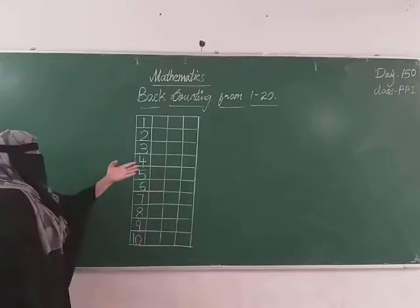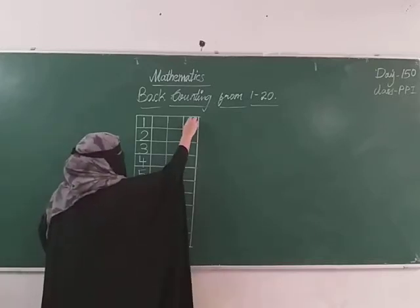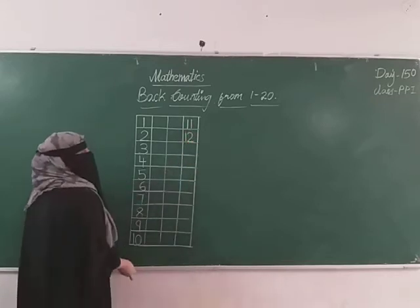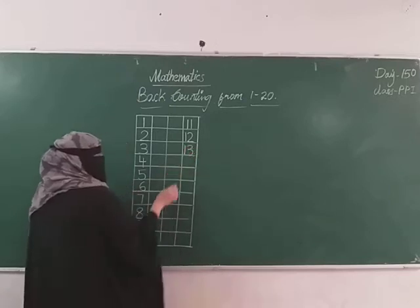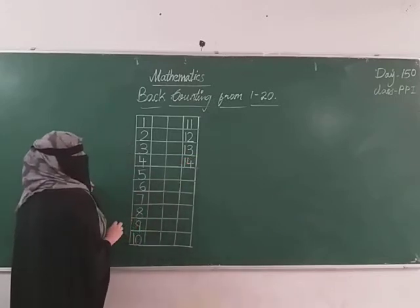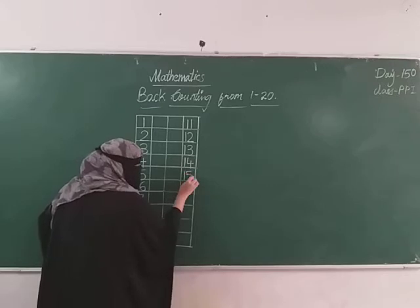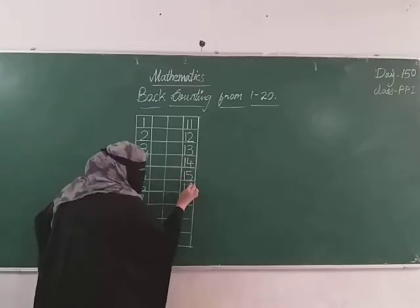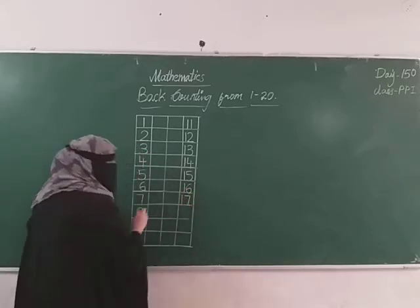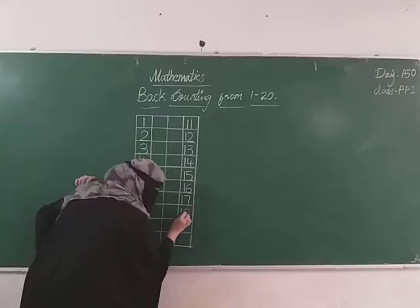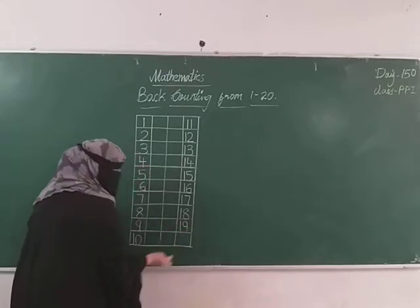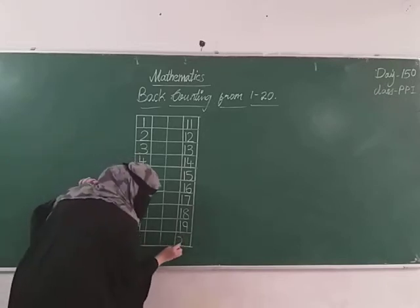Okay, after 10 — see here 1, 1: that is 11. After 11 — 1, 2: 12. After 12 — 1, 3: 13. After 13 — 1, 4: 14. After 14 — 1, 5: 15. After 15 — 1, 6: 16. After 16 — 1, 7: 17. After 17 — 1, 8: 18. After 18 — 1, 9: 19. After 19 — 2, 0: 20.